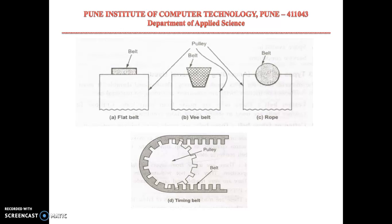The V-belt has a trapezium cross section. These belts are used where a great amount of power is to be transmitted from one pulley to another, and when the two pulleys are near to each other.